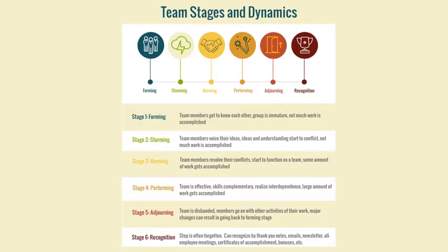Stage four is performing. The team is effective. The skills are complementary. They realize their interdependencies, and a large amount of work gets accomplished. Then we have adjourning. The team is disbanded, so the project is complete. The members go on with their other activities of their work, and major changes can result in going back to that forming stage. And finally, recognition. Unfortunately, this step is often forgotten. You can recognize people as easily as sending them a thank you note or an email, putting the recognition in a newsletter or an all-employee meeting, certificates of accomplishments, bonuses, etc.